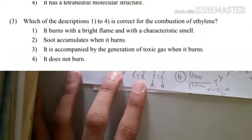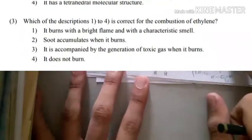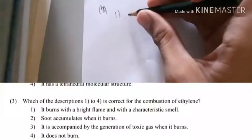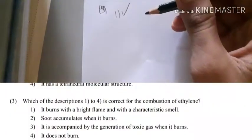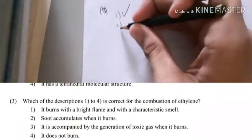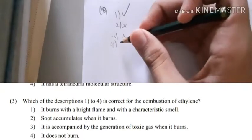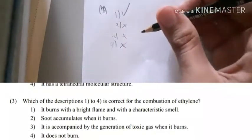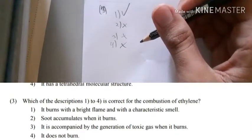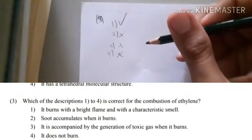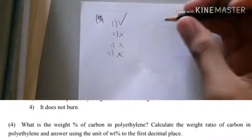Now for number three, the correct description for the combustion of ethylene. Ethylene burns with a bright flame and characteristic smell. It will not have soot, will not be accompanied by toxic gas, and it is flammable. So the answer is number one: it burns with a bright flame and characteristic smell.